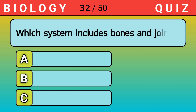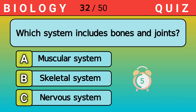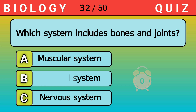Which system includes bones and joints? Answer B. Skeletal system.